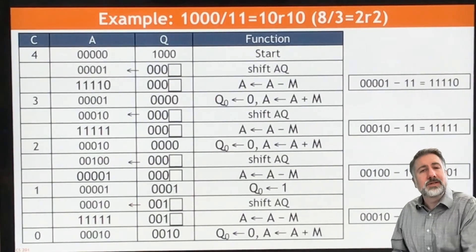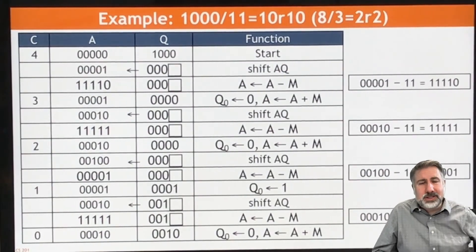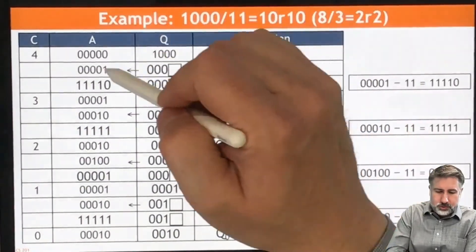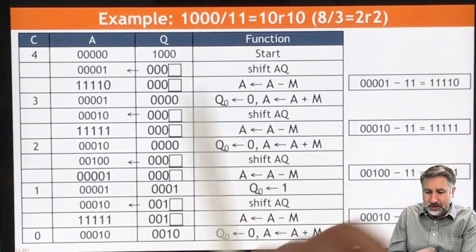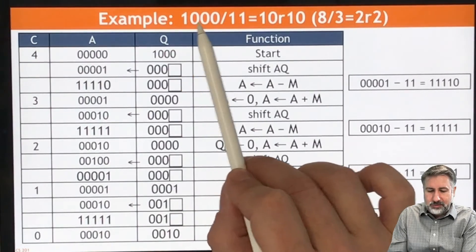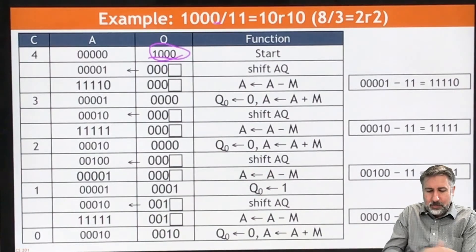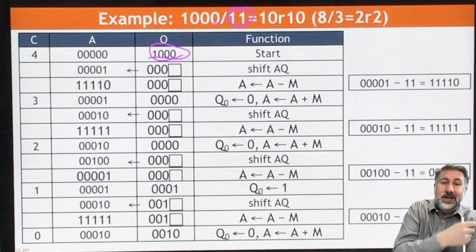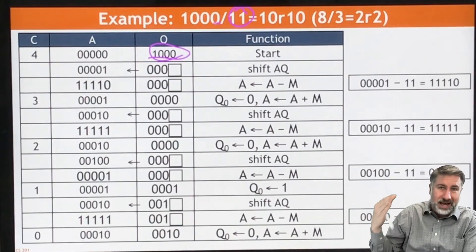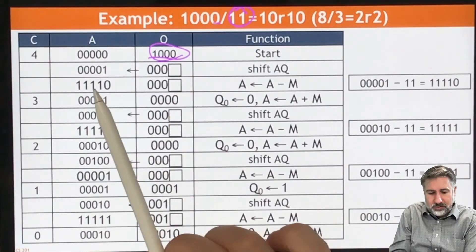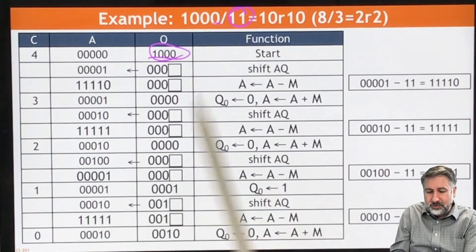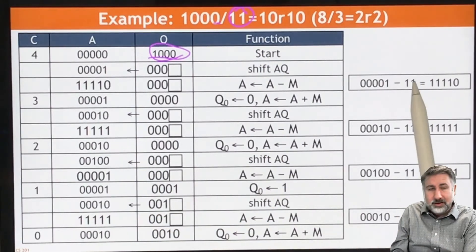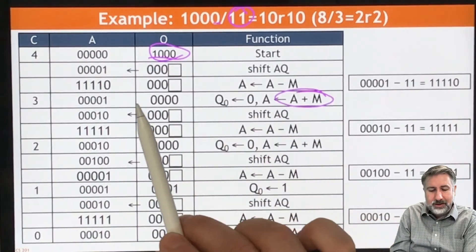Here is an example. We're going to initialize our partial remainder to zero. We're dividing eight by three, and we should get two remainder two. We initialize our divisor to three, and we look at our dividend bit by bit. First we shift to the left, then we subtract, and we get a negative number. That tells us the divisor doesn't fit in the first bit. So we have to add it back again and shift again. Now we have two, and the number we're dividing by is three. We subtract again and get negative one — that doesn't fit.